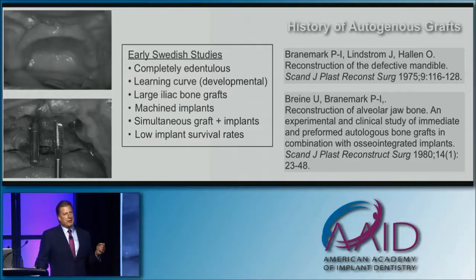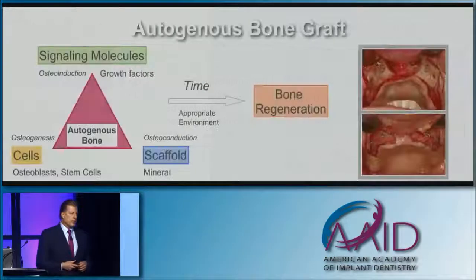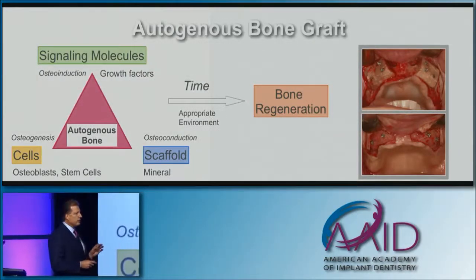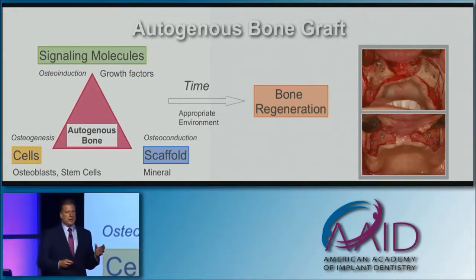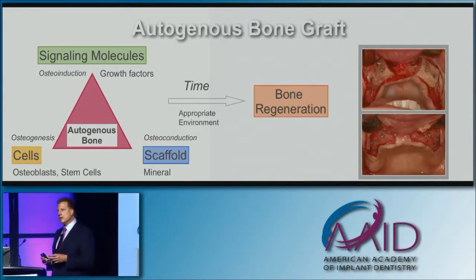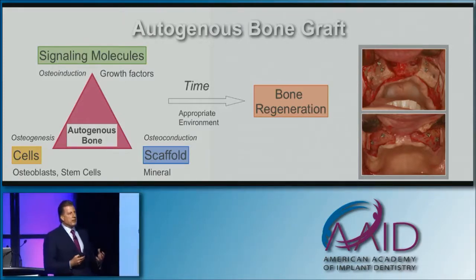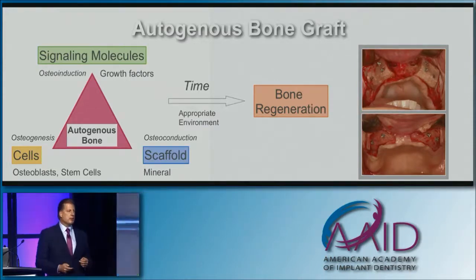Unfortunately, the bad experience with implants with autogenous bone kind of carried over to the present in many clinicians' minds, even today. You're all familiar with the tissue engineering triad — signaling molecules or growth factors, a scaffold that's usually some mineral construct, and cells that are present, whether osteoblasts or mesenchymal stem cells. Autogenous bone fulfills all three aspects of the tissue engineering triad. Given adequate time in the proper environment, you're going to regenerate bone quite predictably.